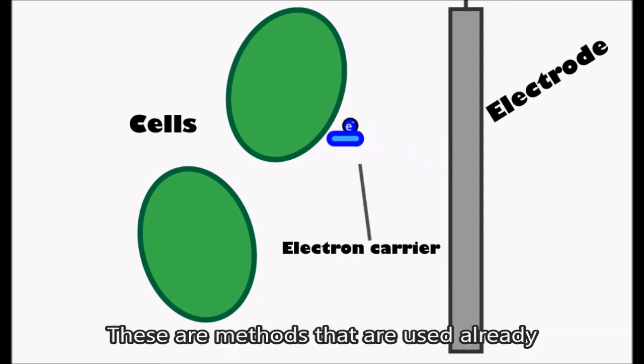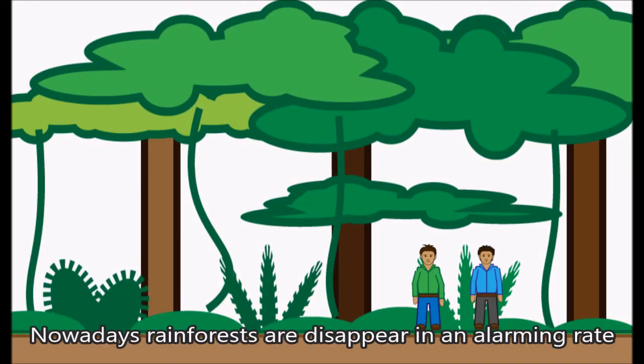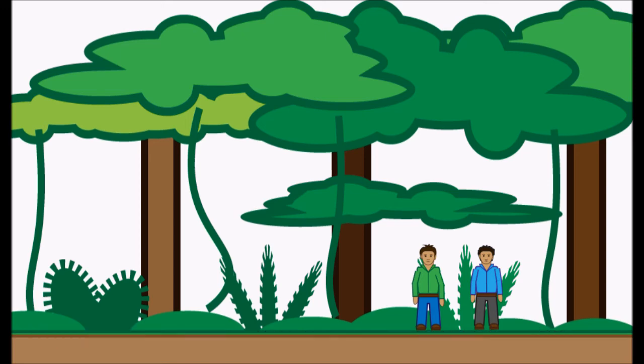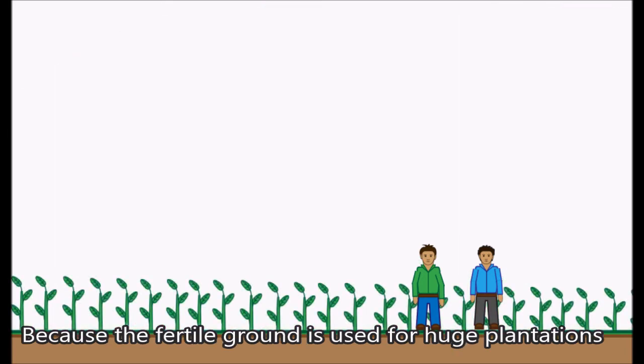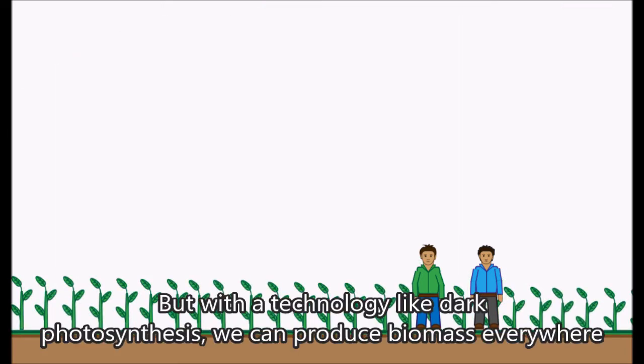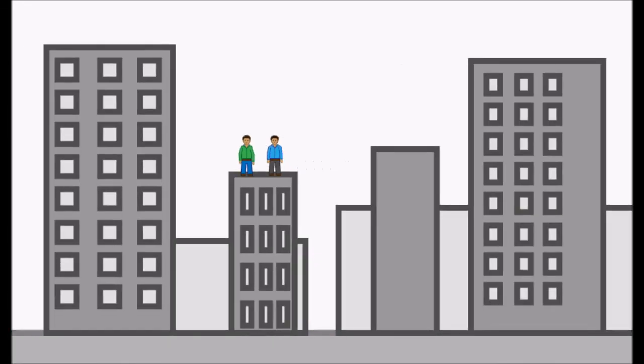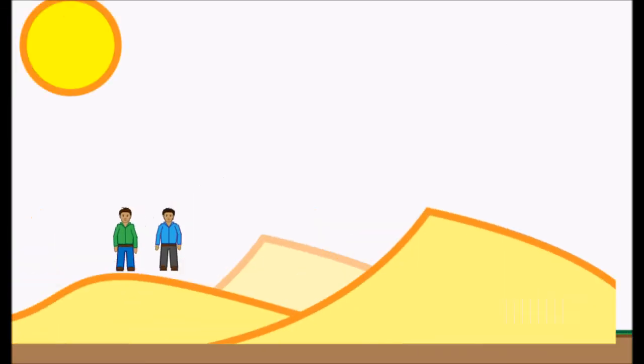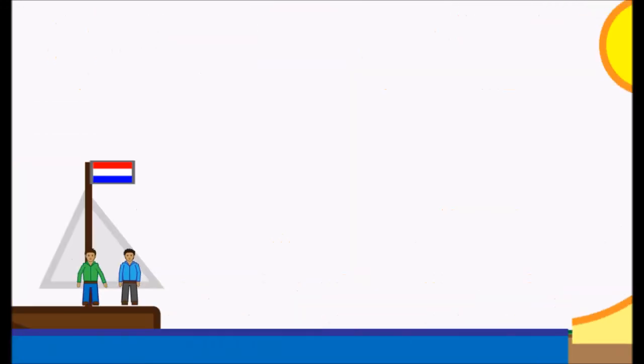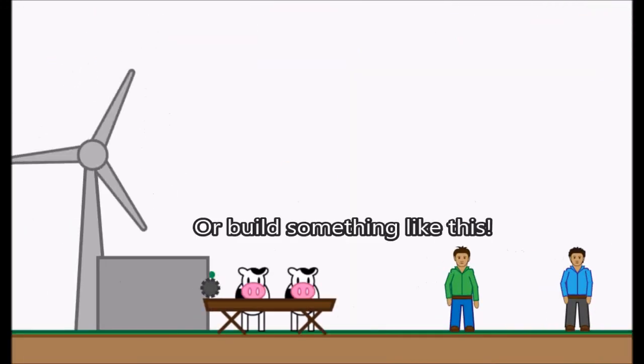These are methods that are used already. Nowadays, rainforests disappear at an alarming rate because the fertile ground is used for huge plantations. But with a technology like dark photosynthesis, we could produce biomass everywhere. Like here. Over here. Over here. We build something like this.